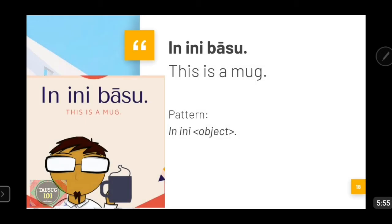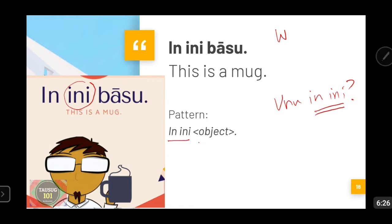How do we reply to 'Uno in ini?' Let's say you have a cup or a mug and you're holding it — it's very near to you, so you use the word 'ini.' You will reply: 'In ini basu.' So if someone asks 'Uno in ini — what is this?' you take the last two words 'in ini,' then add the object you are referring to. Here it's 'basu.' Basu is a mug. So 'In ini basu' means 'This is a mug.'